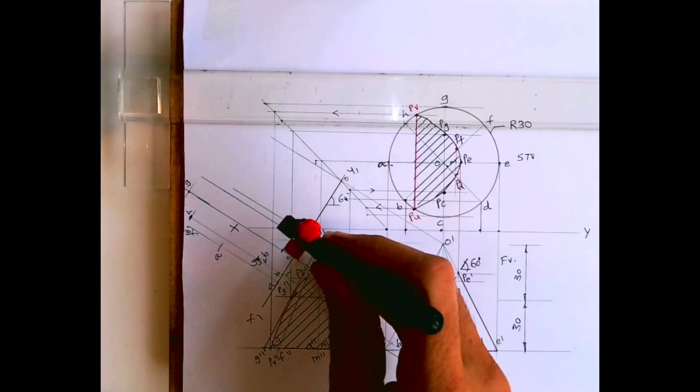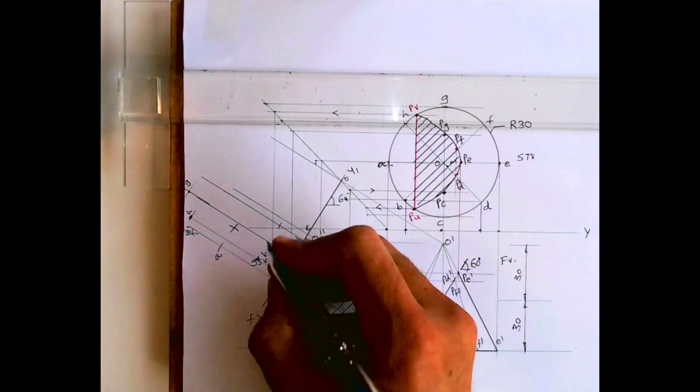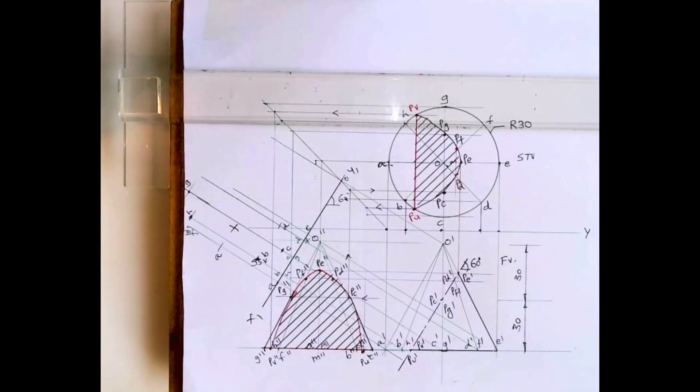Then xy to d, you cut from d. So what we are doing basically, we are transferring width. Always remember in auxiliary top view we are transferring width.